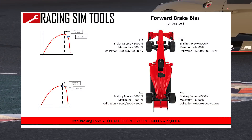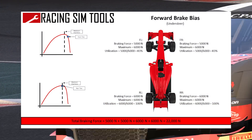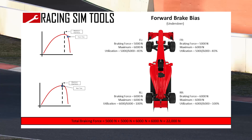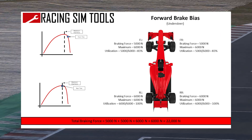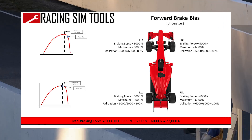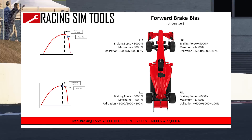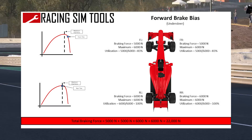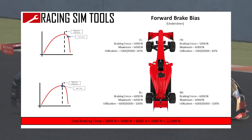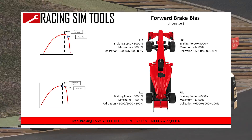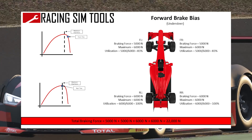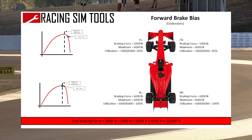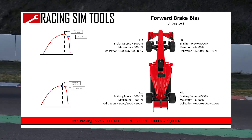Next we're going to be considering what a forward brake bias looks like. Before we start talking about the numbers, let's look at the slip graphs on the left. You can see that the front top graph has the blue dot a little bit more to the right, which if you look on the Y axis is less than the maximum grip force. So we're going to be producing less than the maximum grip force on the front tires. If you look at the rear, we are still producing the maximum grip force at 100%, so that blue dot is still on the maximum grip force dotted line.